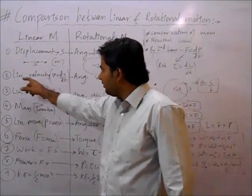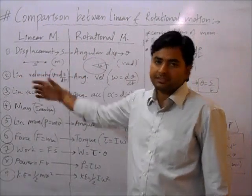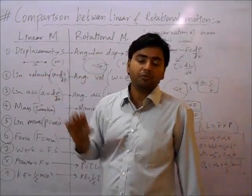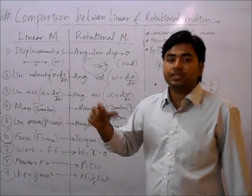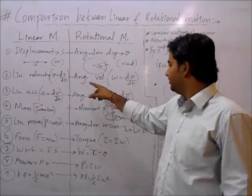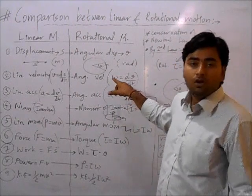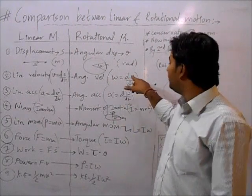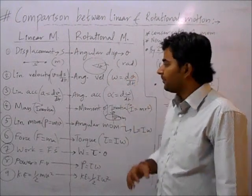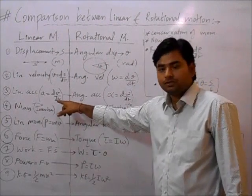Next is velocity. Linear velocity is defined as v = ds/dt — the rate of change of position. Similarly, angular velocity omega is the rate of change of angular position, so omega = dθ/dt.